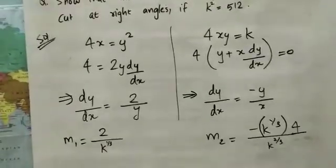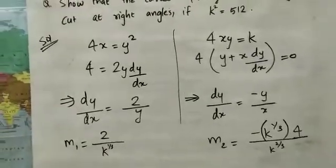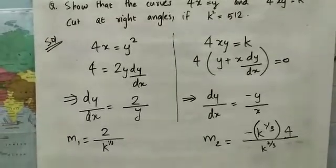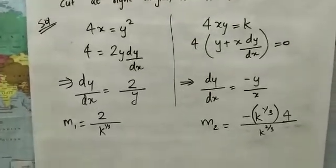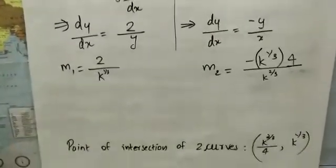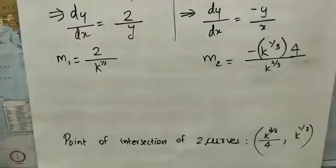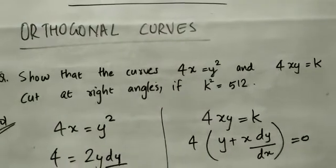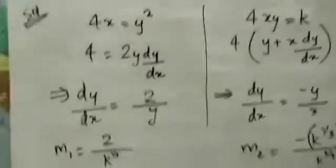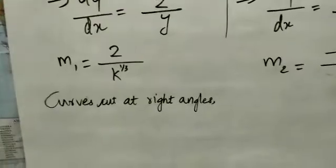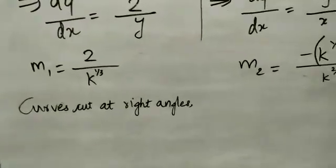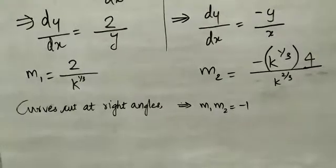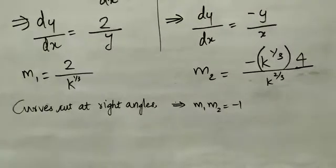Now, for the two curves to cut at right angles, we use the condition that m1 × m2 = −1. We have the two slopes at the point of intersection, so we substitute and compute m1 × m2.